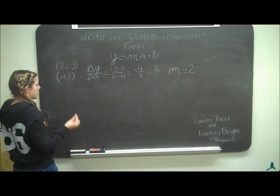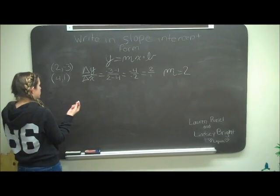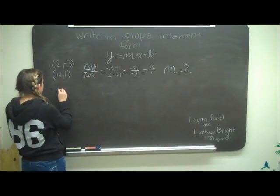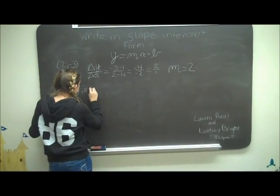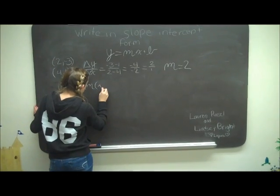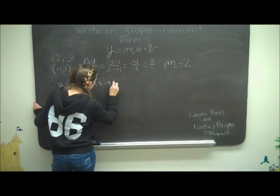To find the y-intercept, you put it in point-slope form, which is y minus y₁ equals m times (x minus x₁).